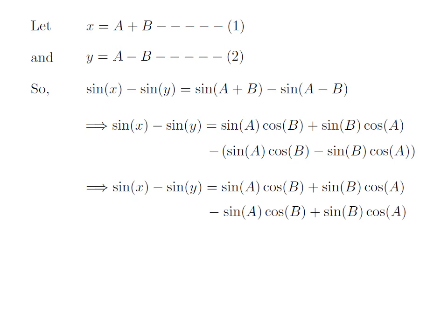As minus into plus is equal to minus and minus into minus is equal to plus, we got sin of x minus sin of y is equal to sin of A into cosine of B plus sin of B into cosine of A minus sin of A into cosine of B plus sin of B into cosine of A.